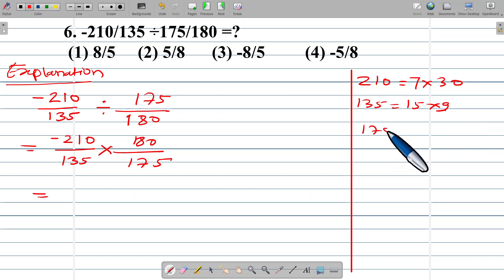175 means 25 into 7, 180 means 9 into 20. Let us rewrite here.